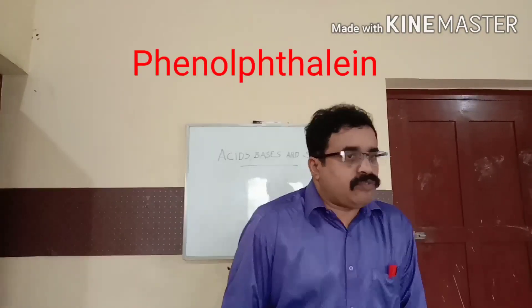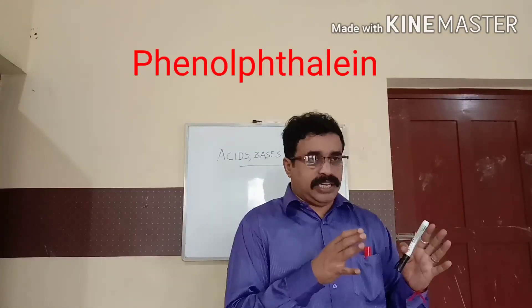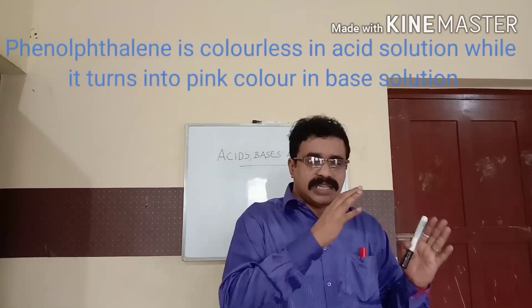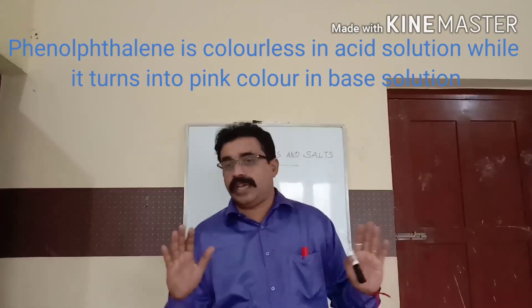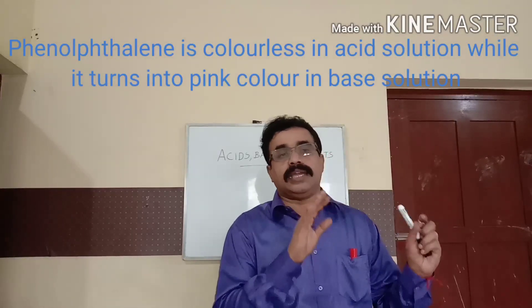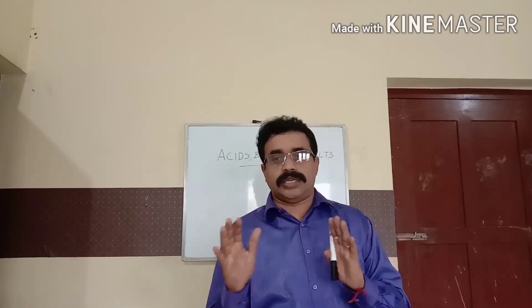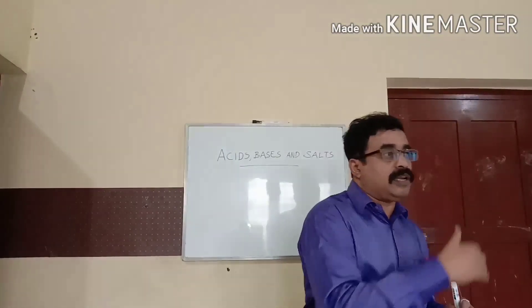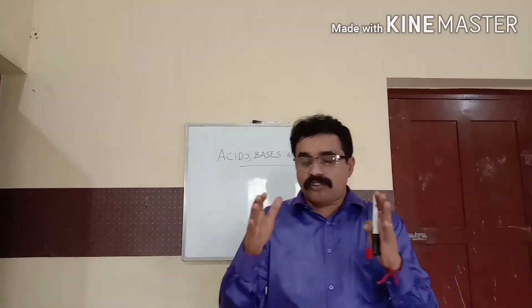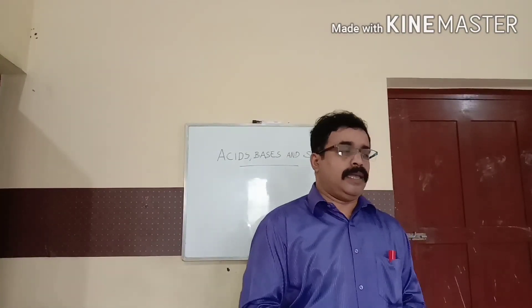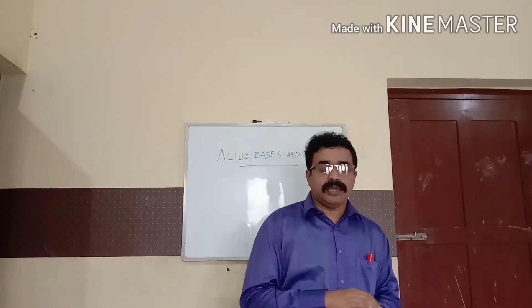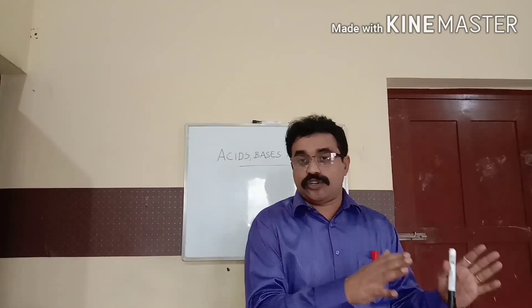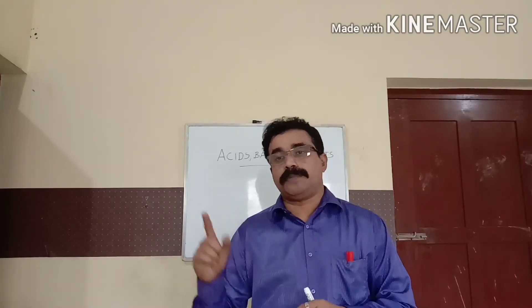The next example of indicator is phenolphthalein. When we add phenolphthalein drops to an acidic solution, it doesn't have any characteristic change — it is colorless, there is no color change. Whereas, if you add a few drops of phenolphthalein to a basic solution, the solution turns pink in color.